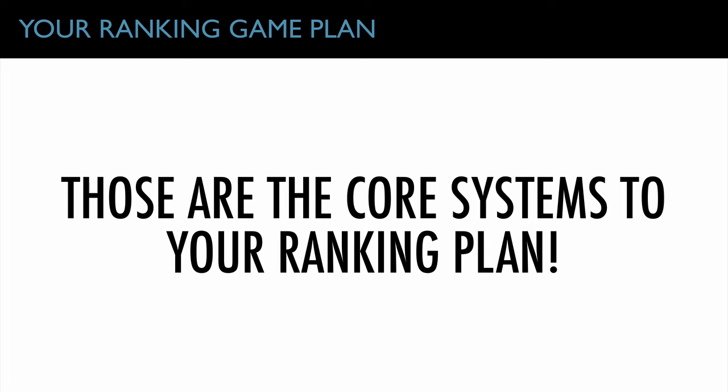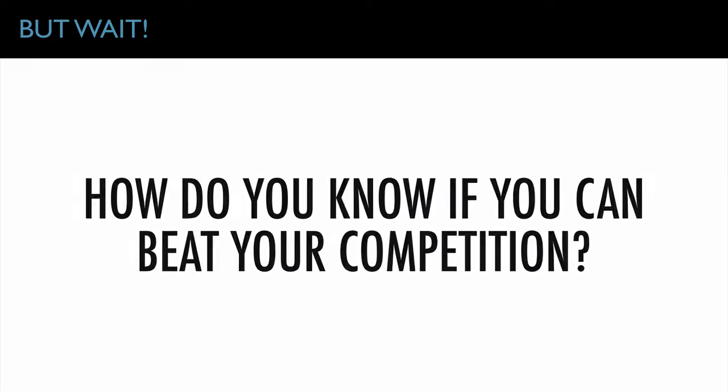So the core systems to your ranking plan: fix the structure of your website, make sure the code is built properly, produce quality content on an ongoing basis at least once a month written specifically to your keywords, then build links to support your content and website. All three together push your website up the rankings, get your Google My Business page into the three-pack, and get you that natural organic traffic.